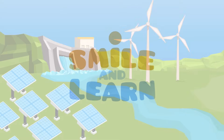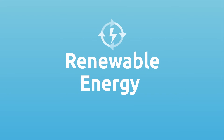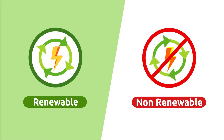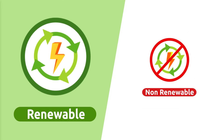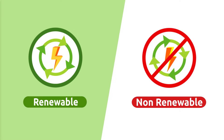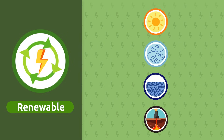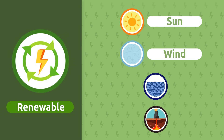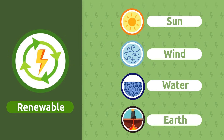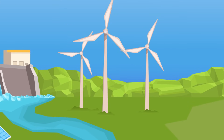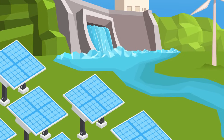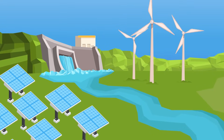Smile and Learn: renewable energy. We obtain energy from two different sources: renewable energy sources and non-renewable energy sources. Today we're going to learn about renewable energy sources. Renewable energy refers to all those limitless energy sources present in nature — the sun, the wind, the force of water, or the inner heat of the earth. These energy sources are naturally replenished, so they never run out.